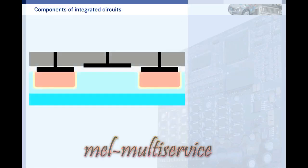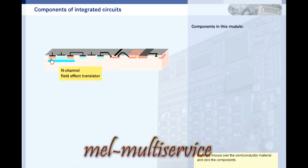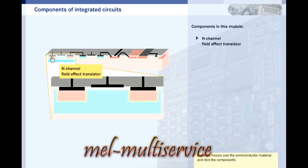Field effect transistors are the basic components of integrated circuits. Numerous transistors and diodes are applied to a common substrate, as well as connecting elements such as connections, resistors and capacitors. Move the mouse over the semiconductor material to see the components. Click them to find out how they work.